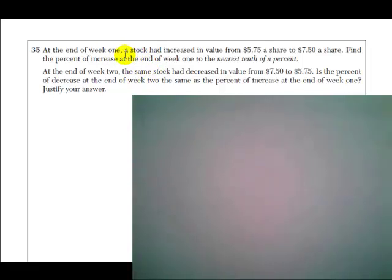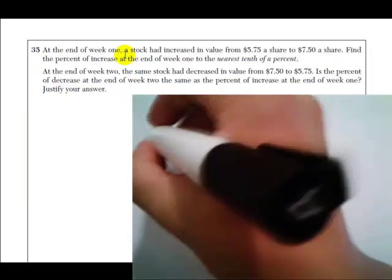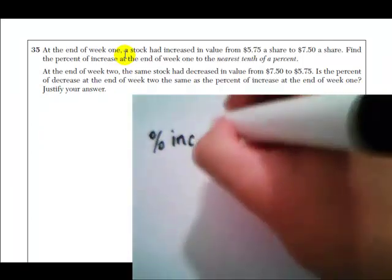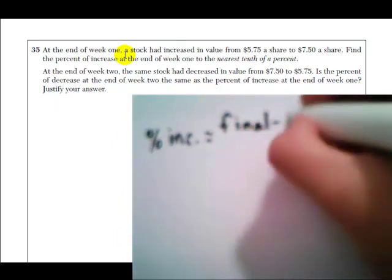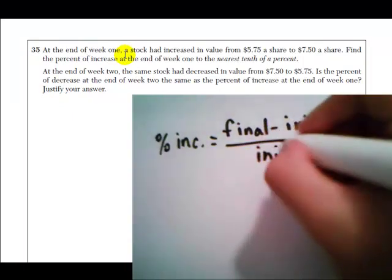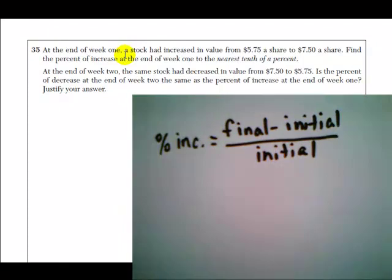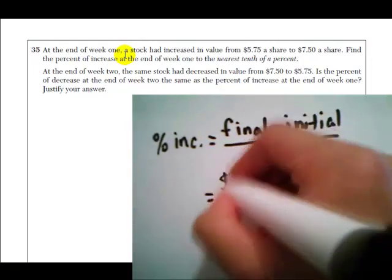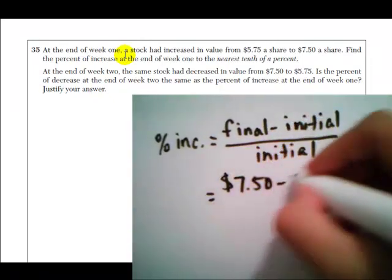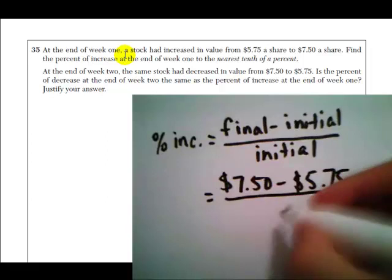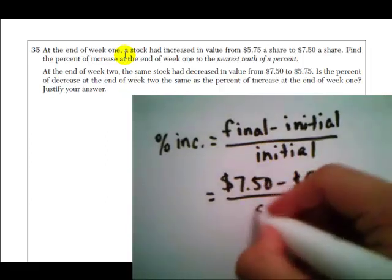So percent increase, just like relative error, really. Percent increase equals the final price of the stock minus the initial price where it started out at, divided by the initial price. So the stock ended up at $7.50, it started out at $5.75. We want to see what proportion that change is of the original price.